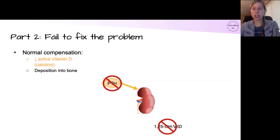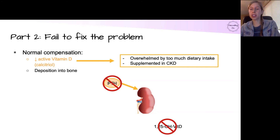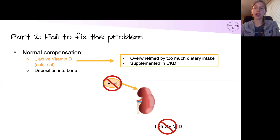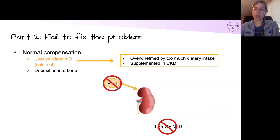However, there's a problem with this compensatory mechanism: if you simply have so much calcium that even with fewer transport channels, you're still getting paracellular absorption and too much calcium absorbed. Additionally, in chronic kidney disease, activated vitamin D — calcitriol — must be supplemented directly because the kidneys can't activate it themselves, which skirts around this compensatory mechanism entirely.